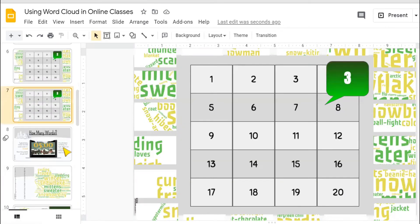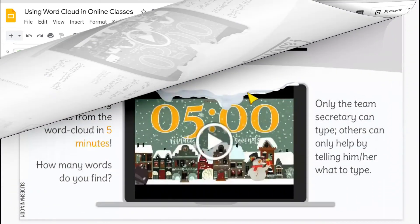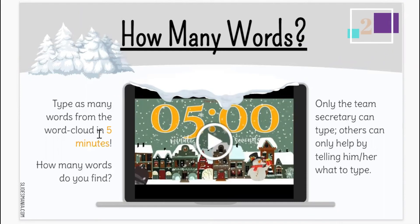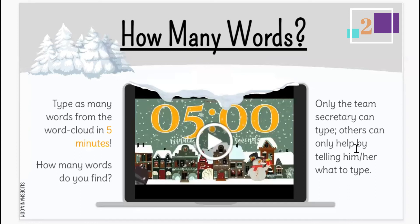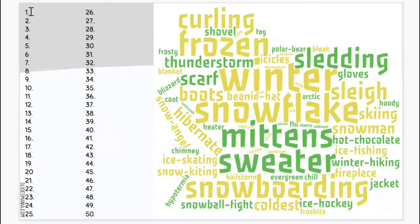The second activity is 'How Many Words.' Each group needs to type as many words from the word cloud that they assembled before in five minutes. Only the team secretary can type; others can only help by telling him or her which words to type. To ensure a fair share, you can set a rule like: every five words typed, the team secretary must change, so everyone has the same opportunity to write. At the end of five minutes, ask them to count how many words they found.